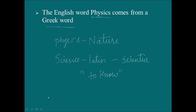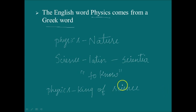Since we study natural events in Physics, one thing is sure — there should be a mathematical description for the natural events we study. Both Physics and Mathematics are very important in studying any natural phenomenon. So if Physics is the king of science, then Mathematics is the queen of science. Both are interrelated.